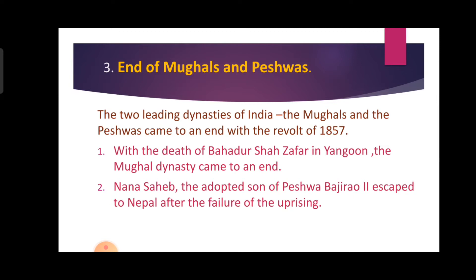The third result is end of Mughals and Peshwas. The two leading dynasties of India — the Mughals and Marathas — came to an end with the revolt of 1857. With the death of Bahadur Shah Zafar in Yangon, the Mughal dynasty came to an end. Nana Sahib, the adopted son of Peshwa Bajirao II, escaped to Nepal after the failure of the uprising.